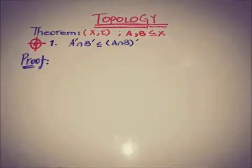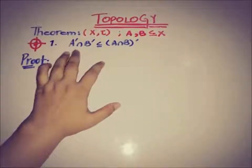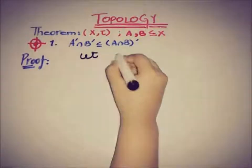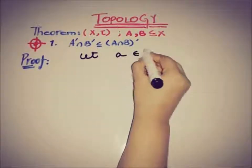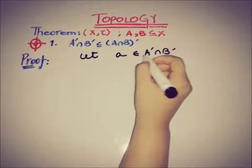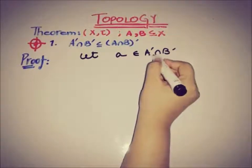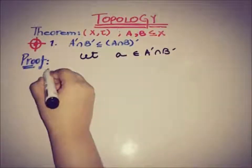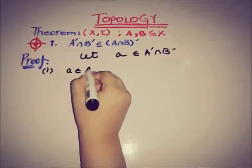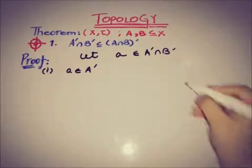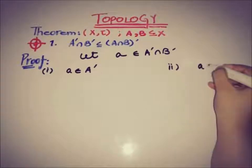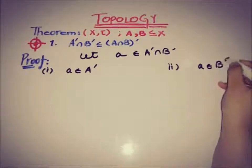The first part we have to prove is that A' ∩ B' is a subset of (A ∩ B)'. So let's take a point a belonging to A' ∩ B'. This means that a is a member of A' (the accumulation set of A) and also a is a member of B' (the accumulation set of B).